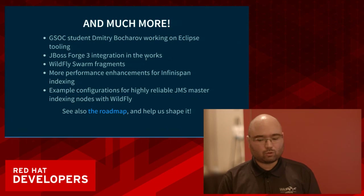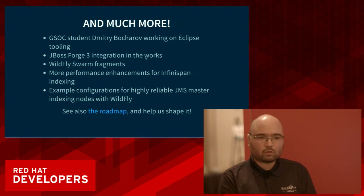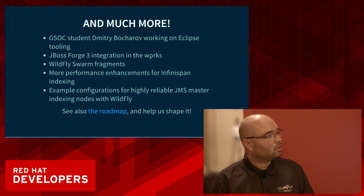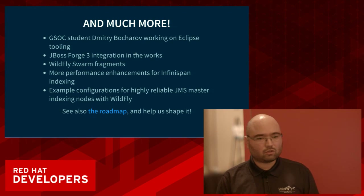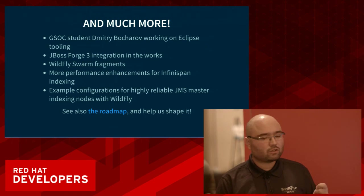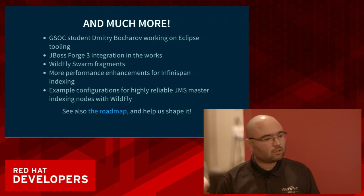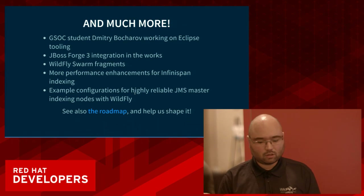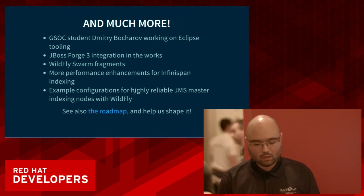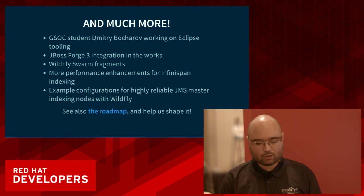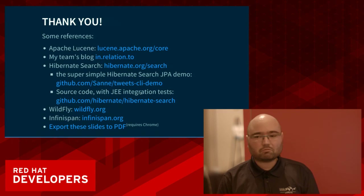We also have another Google Summer of Code student who worked on tooling for Eclipse — an embedded directory viewer in Eclipse so you can quickly inspect the Lucene index without downloading separate tools like Luke. It will have JBoss Tools integration. InfiniSpan is getting faster every release; we have a new idea to improve indexing performance far beyond what we have today. We're also working on better configurations for highly available setups. If you want to see more, I'll keep the roadmap updated on search.hibernate.org. If you have suggestions, help me shape it further. Thank you very much for listening.